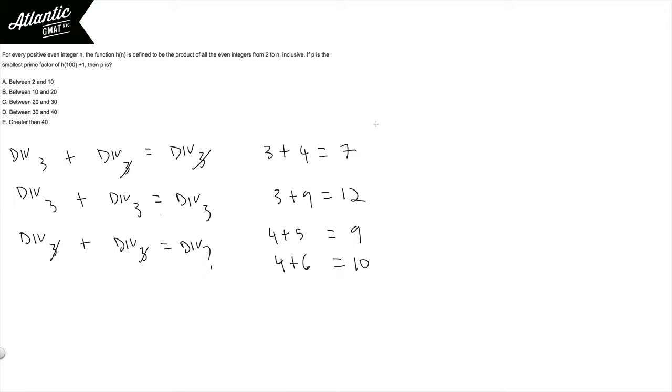We're told that h of n is the product of numbers from 2 to whatever n is. So that should make you think factorial. But there's a wrinkle - we're only talking about the even integers. So let's say it were h of 10, we'd be talking about these numbers.